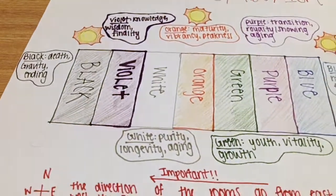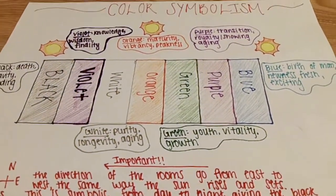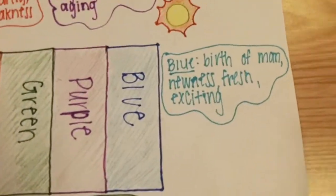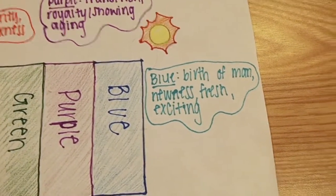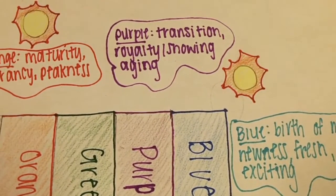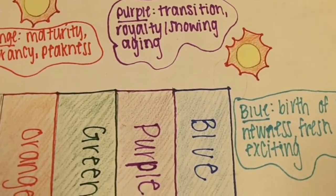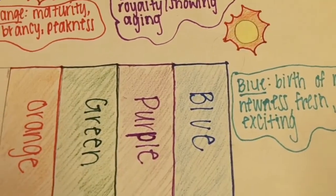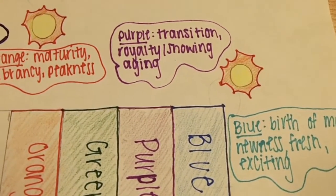Next we're going to be talking about color symbolism throughout the rest of the story. We talked about how red is important, and the black room being the last room is really important. But other than that, you just need to know that the other colors are there and that they all symbolize something. The blue room is the first room and it represents the birth of man — newness, being fresh, exciting. Then we have the purple room, which symbolizes transition and royalty, showing aging. Purple is generally the color of royalty, but here it just shows the next sign of aging and not being as fresh as blue.